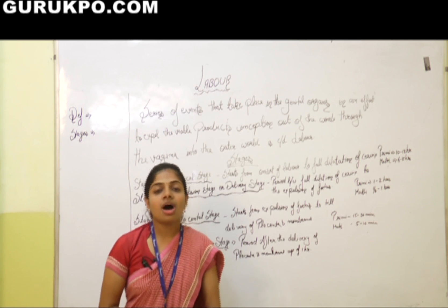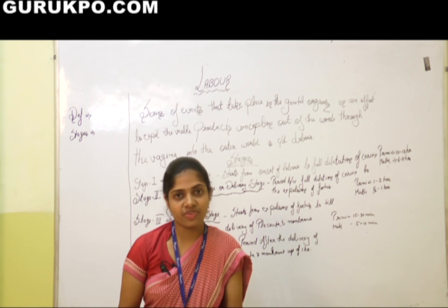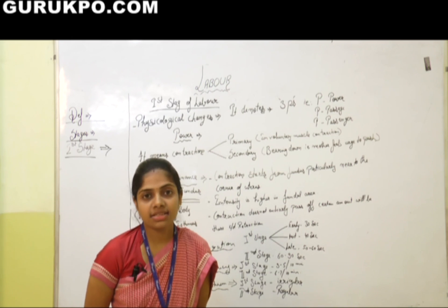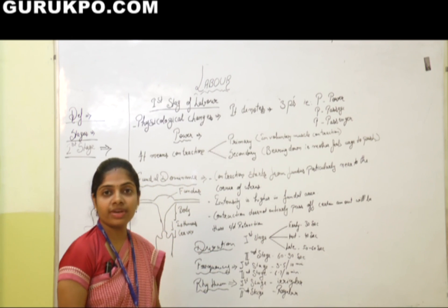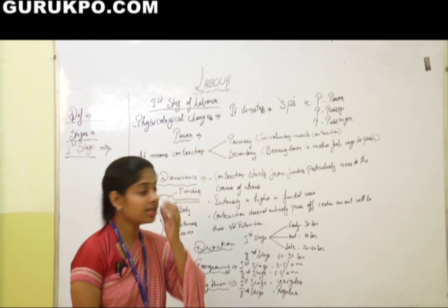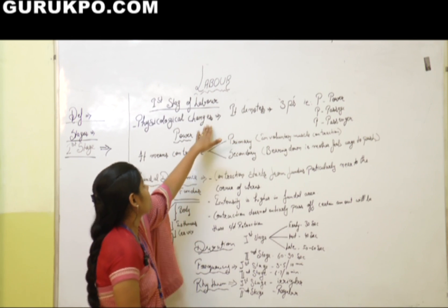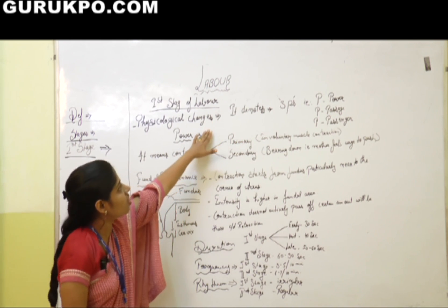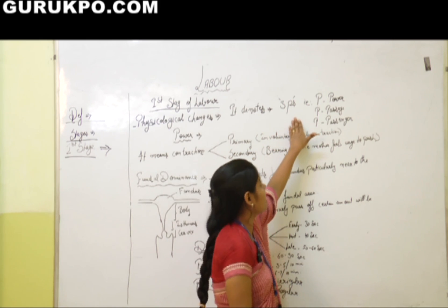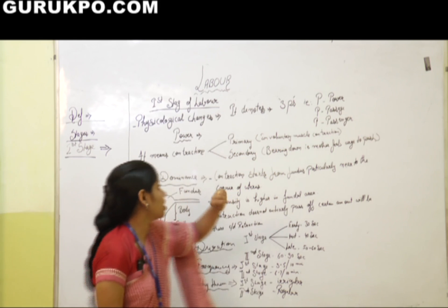Now we will discuss the first stage in detail. In the first stage of labor, the physiological changes are denoted by three P's: power, passage, and passenger.